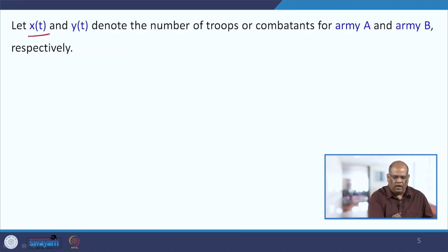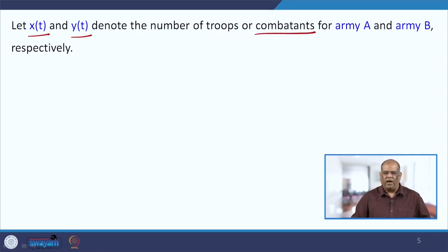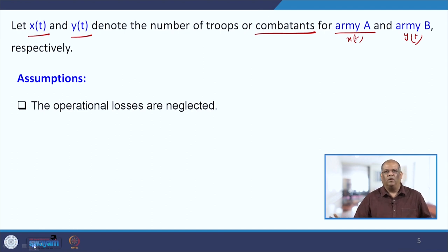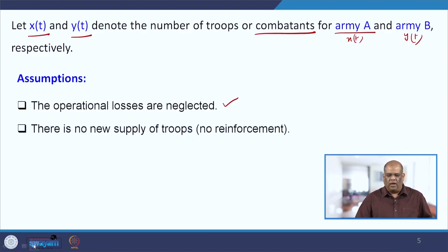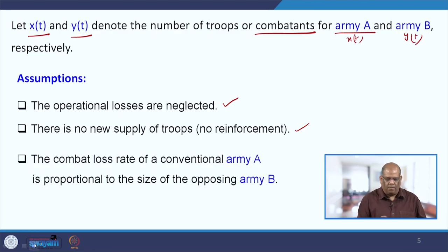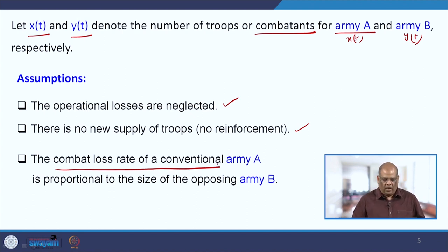If X(t) and Y(t) denote the number of troops — or combatants — that is the persons who are fighting each other, then X(t) is for army A and Y(t) is for army B. Now we have to make the assumptions. The first assumption is that operational losses are neglected. The second is no new supply of troops — no reinforcement. The third and most important: the combat loss rate of conventional army A is proportional to the size of the opposing army B.